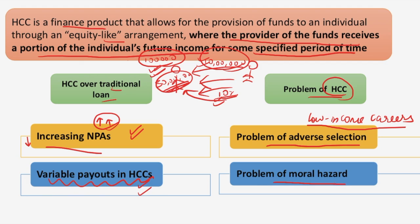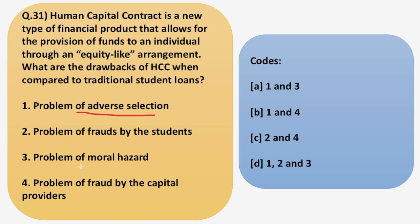Then we have the problem of moral hazard, which means human capital contracts, like income taxes, can contribute to moral hazard by discouraging borrowers from maximizing their income and encouraging them instead to focus on non-wage-based forms of compensation — such as more enjoyable work, better benefits, or lighter schedules. So students who have opted for HCC will not take extra effort to increase their salaries; they would rather go for more enjoyable work. These are the two main problems — adverse selection and moral hazard — which are the main drawbacks of HCC.